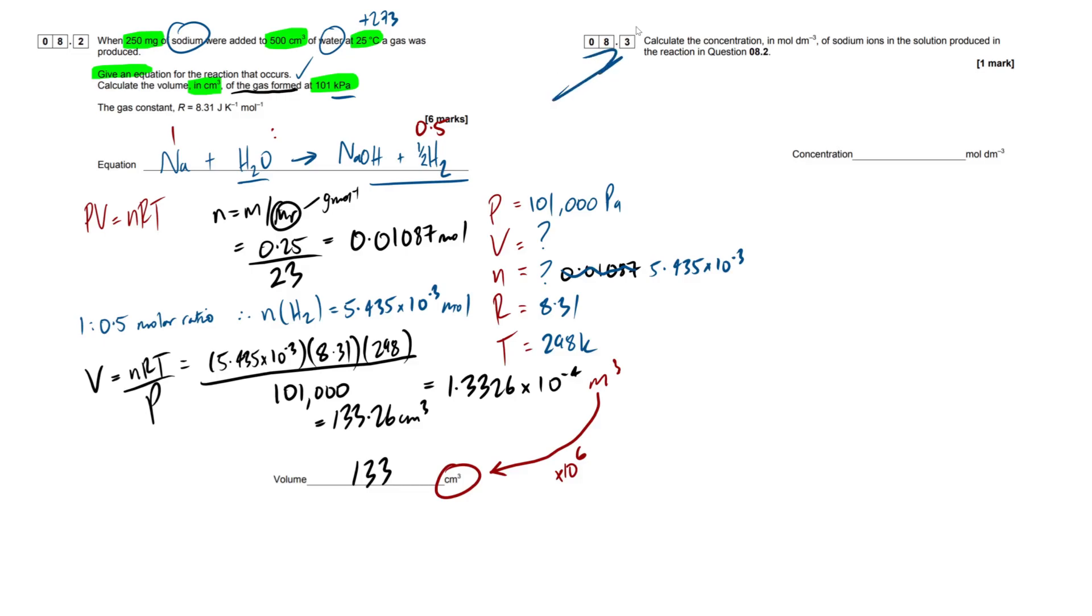Swiftly moving on to 8.3 then. Calculate the concentration in moles per decimeter cubed of sodium ions in the solution produced in the reaction. So this is really simple, guys. Now, they've asked us for concentration, and we worked out the moles initially. Right here is this thing I've scribbled out, 0.01087 mole. That was the moles of sodium. Now, there's going to be one mole of sodium within this mole of sodium hydroxide.